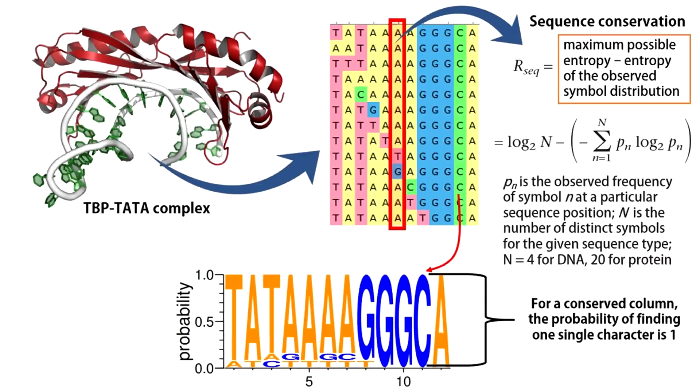You all remember probability, right? Well, in this conserved alignment column with no gaps, what is the probability of finding cytosine? It's 1 obviously. See for this column, the character C spans the full range of 0 to 1.